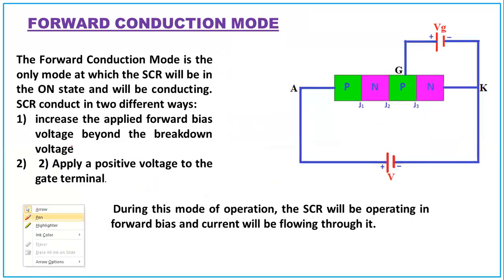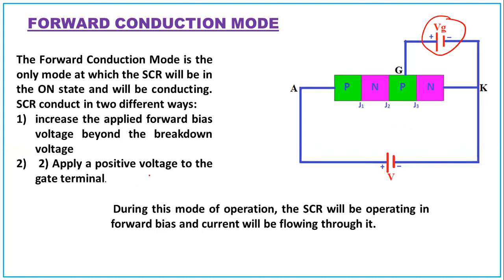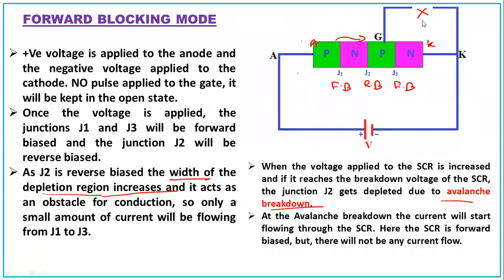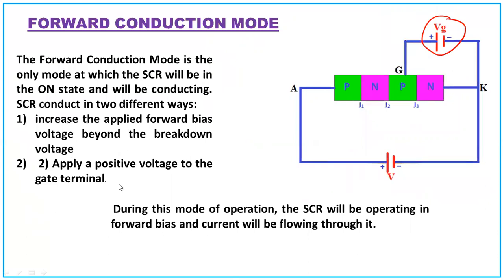The forward conduction mode is the only mode at which the SCR is in the on state and conducting. SCR can conduct in two ways: increase the forward biased voltage beyond the breakdown voltage VBO, or apply a positive voltage to the gate terminal. During this mode the SCR operates in forward bias and a considerable increase in anode current is observed. The forward blocking mode is the same but without the gate pulse — it is blocked.